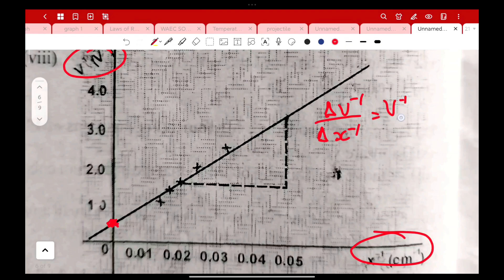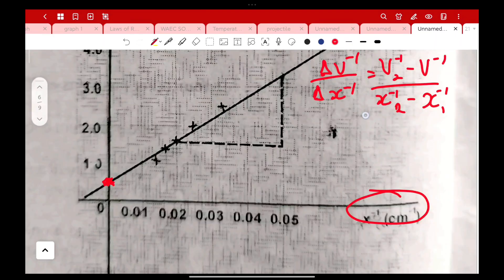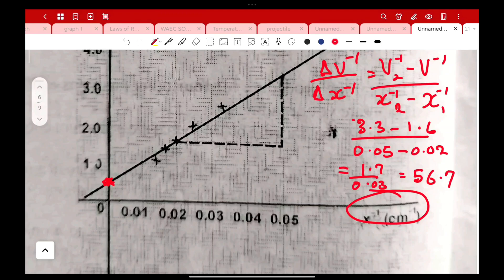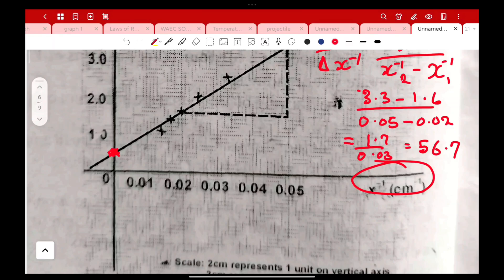Look at this point, this is the point of intercept. If you are going to solve for your slope, it will be change in V inverse over change in x inverse. By expansion, we'll have V inverse 2 minus V inverse 1, all divided by x inverse 2 minus x inverse 1. So 3.3 minus 1.6 all divided by 0.05 minus 0.02, this will give us 1.7 divided by 0.03, and our answer becomes 56.7.